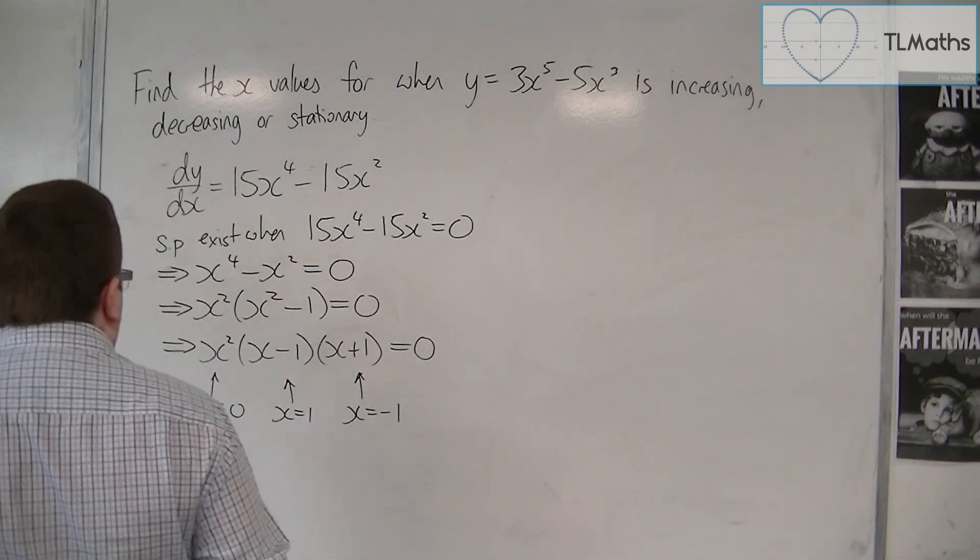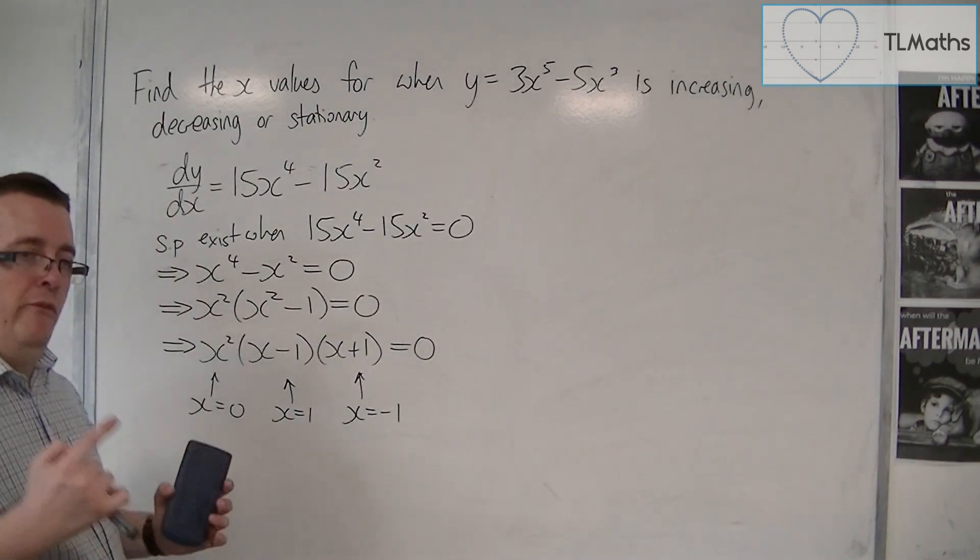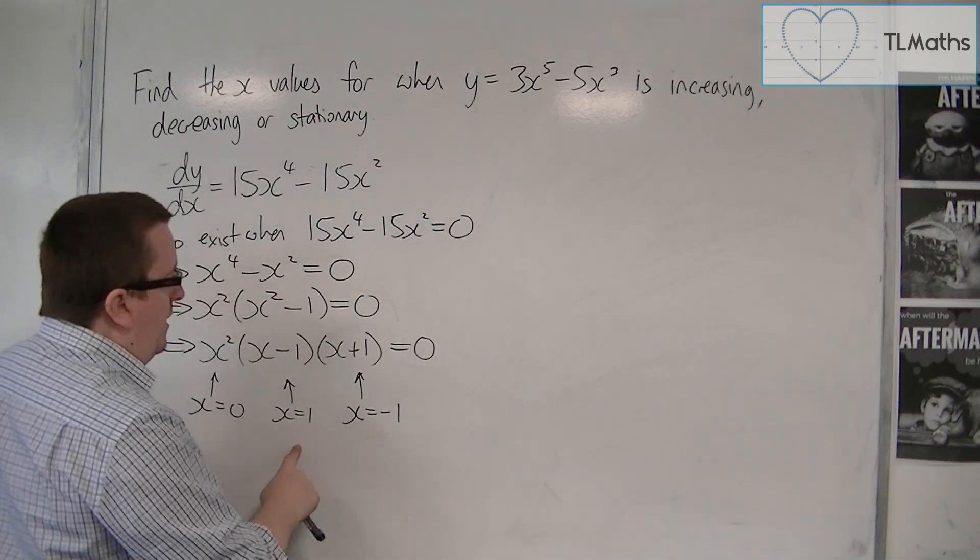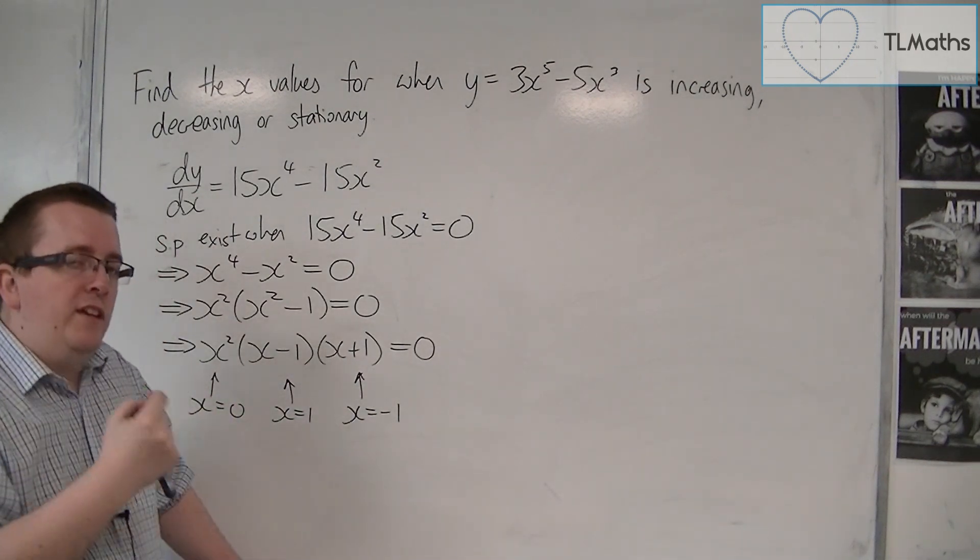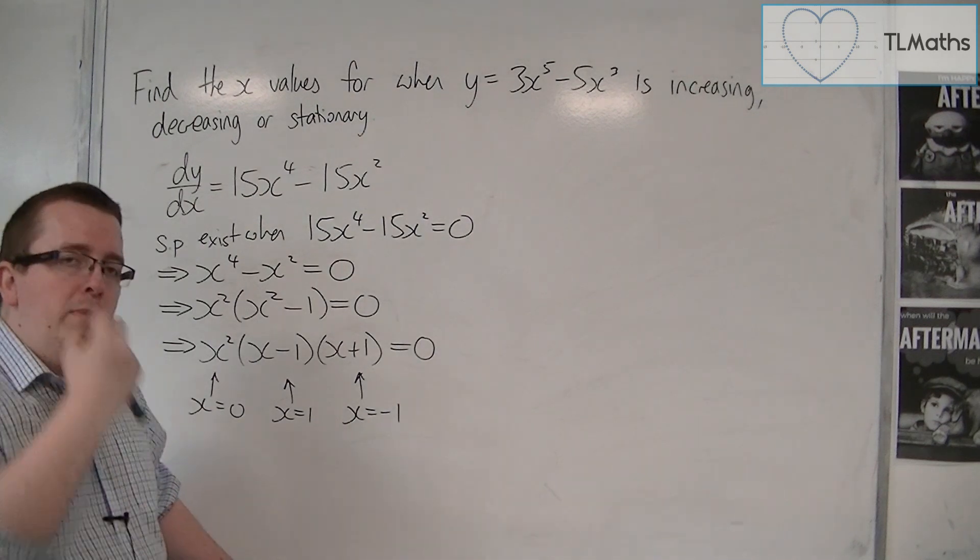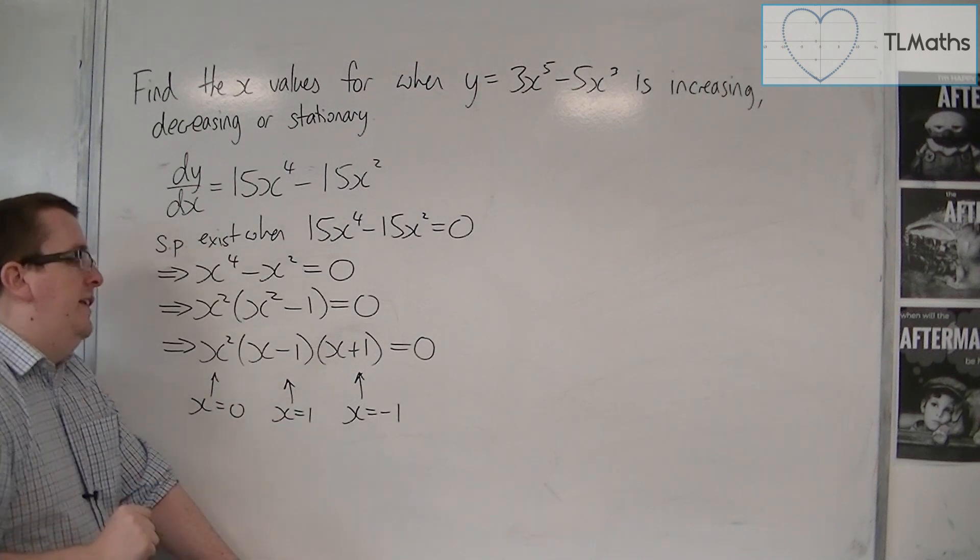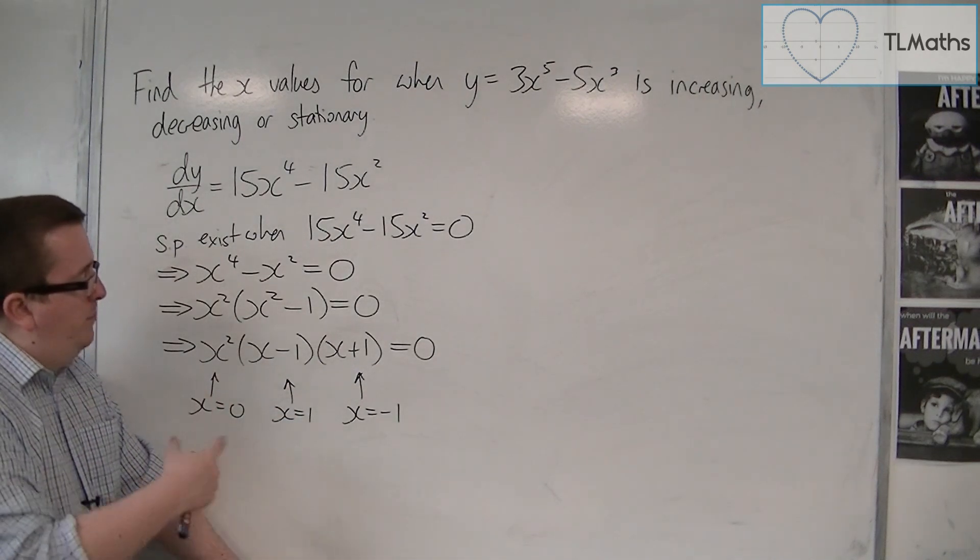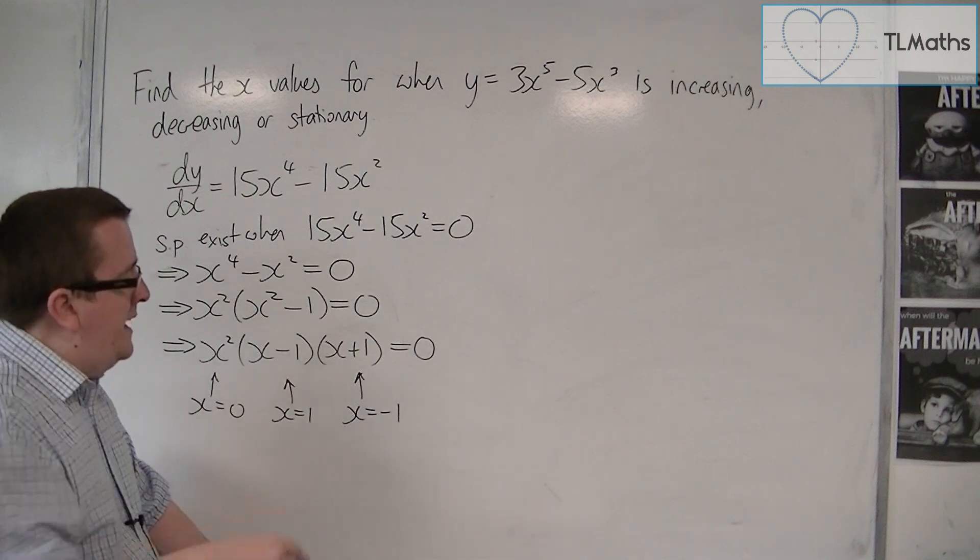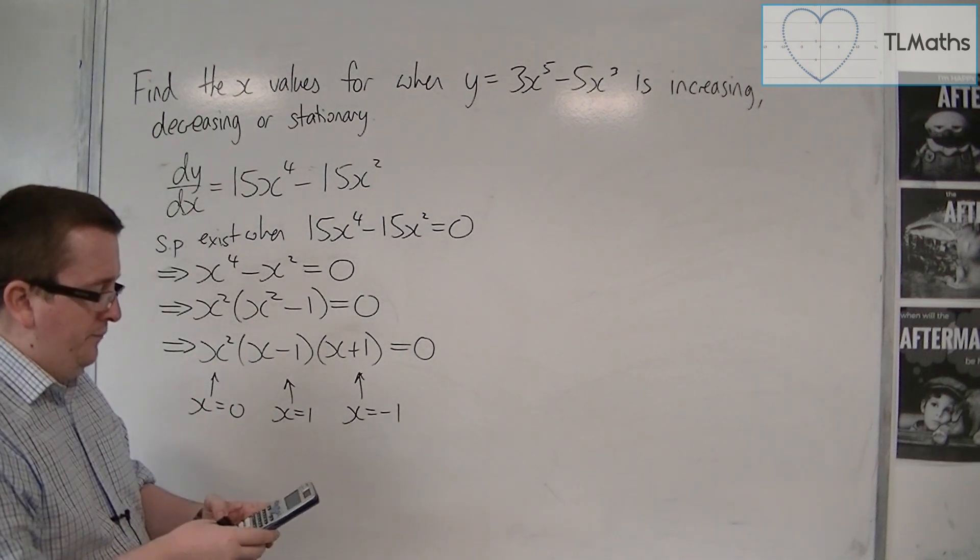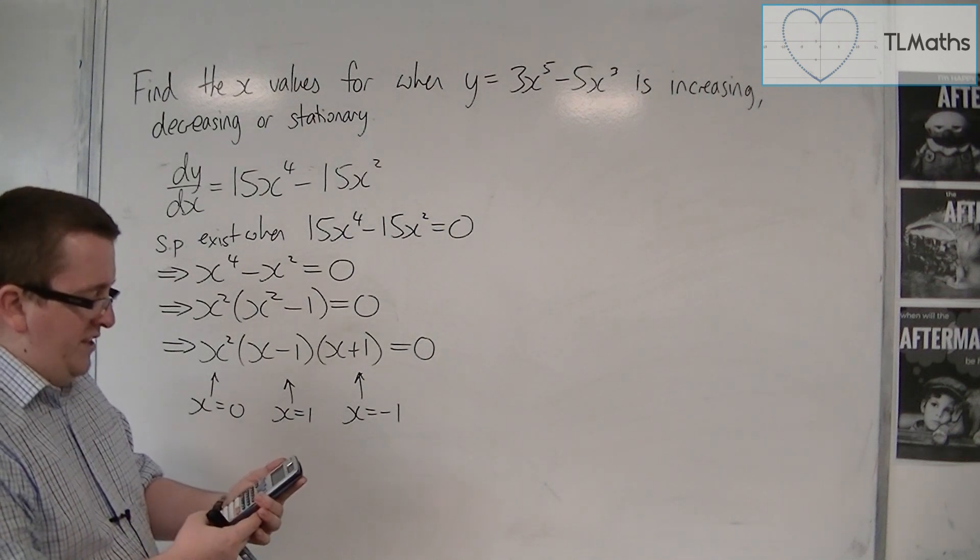And now the step. Now we've got to be careful here. We don't want to choose a step of 1, because that will step us from minus 1 to 0 to 1, without looking at the gradient of the curve between. You must try and get the gradient of the curve between these stationary points. And so it would make sense to put it at 0.5. At least then I'm looking at the gradient either side of each point. So 0.5 will be the step.